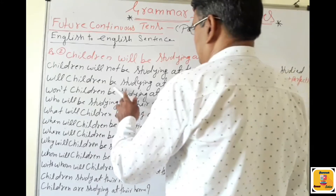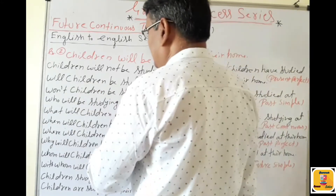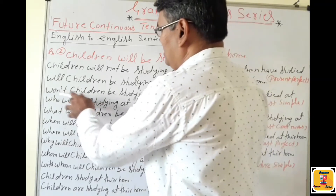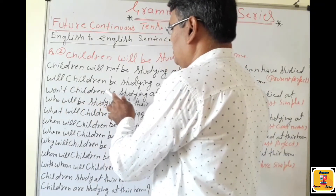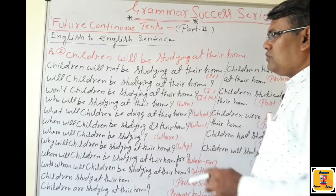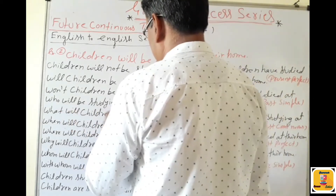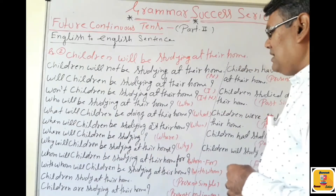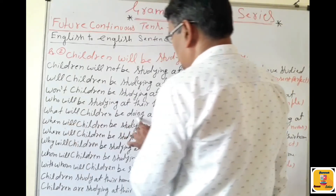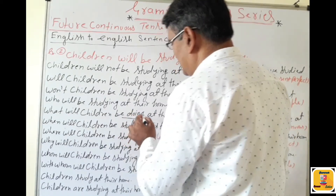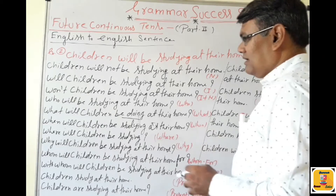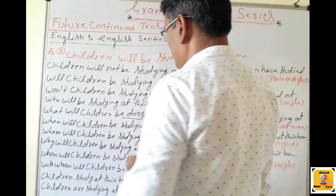Interrogative: 'Will children be studying at their home?' Use of 'What': what can be used in place of 'studying'? We should write 'doing' — because the children are at home, what will they be doing? 'What will children be doing at their home?' Use of 'When': 'When will children be studying at their home?'